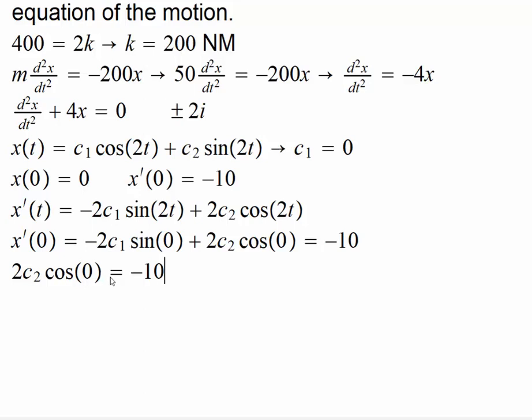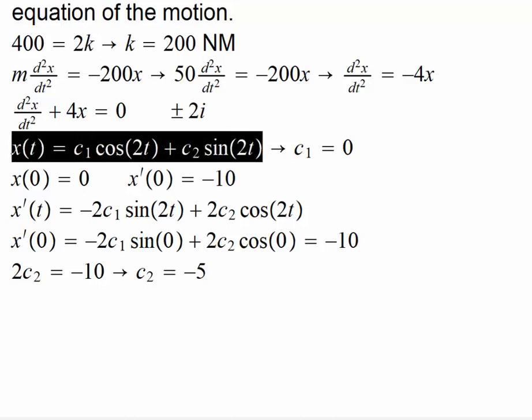Cosine 0 is 1, so that just becomes 2c₂ equals negative 10. So our c₂ is simply negative 5. So the equation of the motion becomes, in this case, c₁ is 0 and c₂ is negative 5.